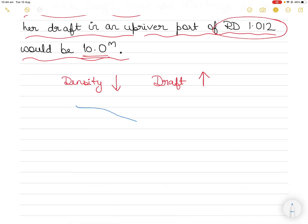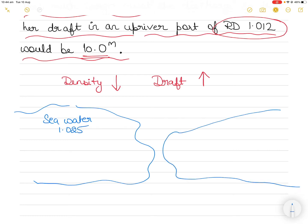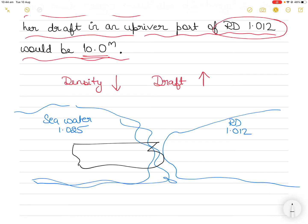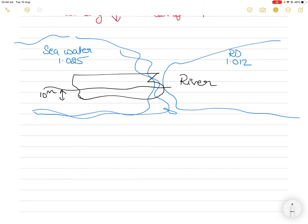Let's draw a diagram to make this clearer. On one side we have seawater of relative density 1.025, and on the other side relative density 1.012 — this is the river. At the mouth of the river the draft of the vessel is 10 meters, and this is what the draft should remain even when it goes into the river of 1.012. Ideally, if nothing is done, the vessel would sink and the draft would increase.